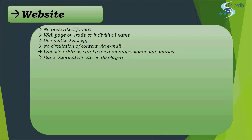Basic and necessary information — number one: what is your name, your trade name, or if this is a website of a firm, what is the firm's name? Then you give your year of establishment, or the year of qualification as a CA. Then you also write down your address — the address of the member as an individual, or the location of your firm. Along with the address, mention head office and branch addresses, telephone numbers, email IDs and fax.